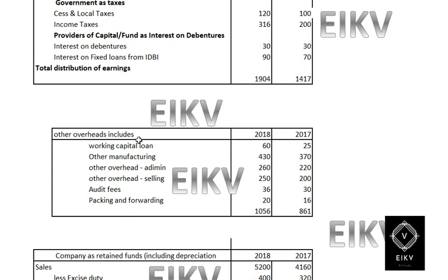I will now explain the other overhead figure used in the cost of bought-out. It includes: working capital loan interest of 60 and 25, other manufacturing overhead of 430 and 370, other administration overhead of 260 and 220, other selling overhead of 250 and 200, audit fees of 36 and 30, and packing and forwarding of 20 and 60. The total comes to 1056 and 861.